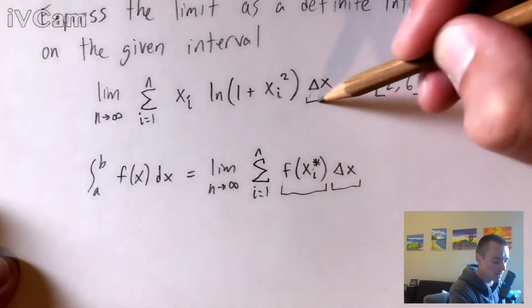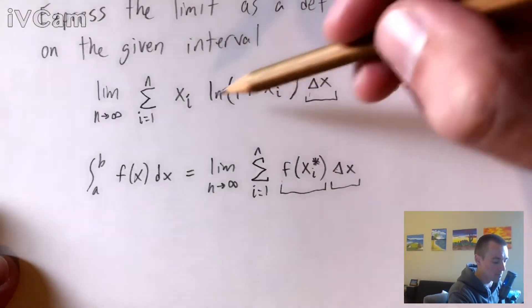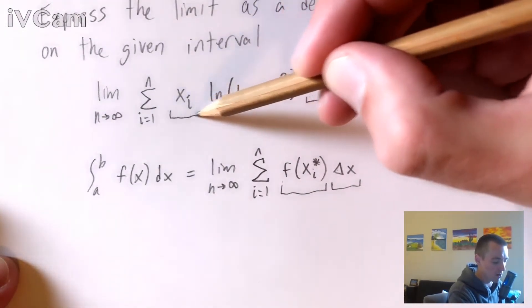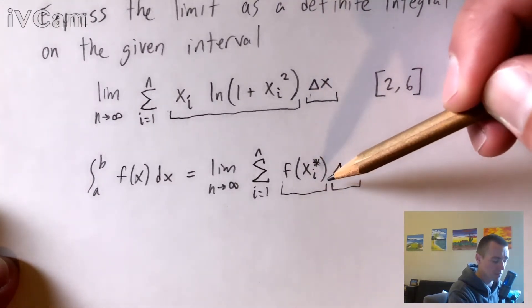So we can see we have this delta x here. So that is good. So that must mean that basically the rest of this stuff here corresponds with this f of xi star.